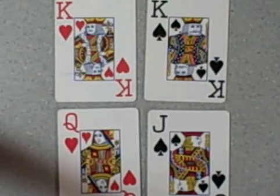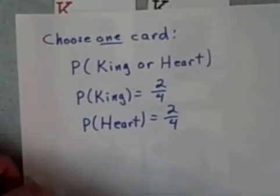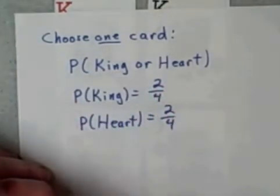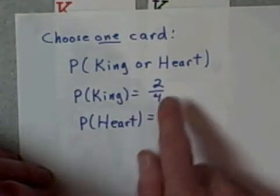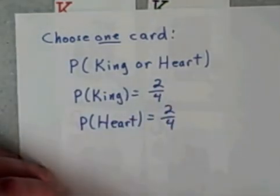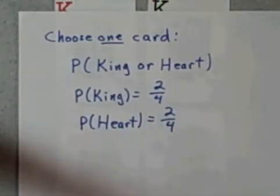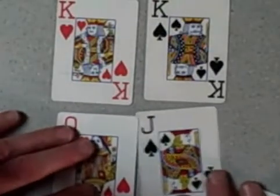Well, according to that formula we had, the probability of getting a king or a heart, the probability of getting a king since there are two of them is two out of four. The probability of getting a heart is two out of four because there's two of them. Well, if I add two out of four and two out of four, that's four out of four. That's one, a hundred percent chance. Do I really have a hundred percent chance of getting a king or a heart? Well, no, because I've got this jack down here.